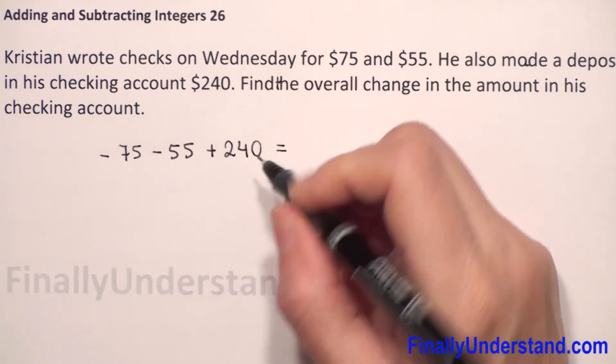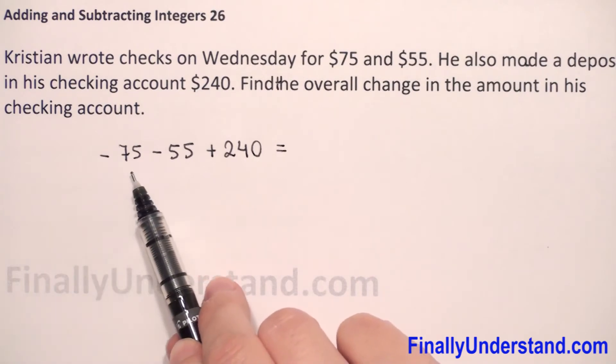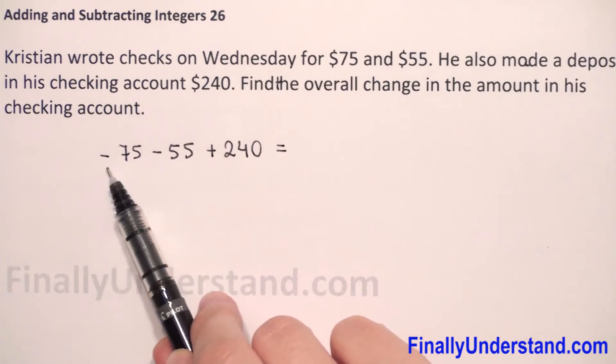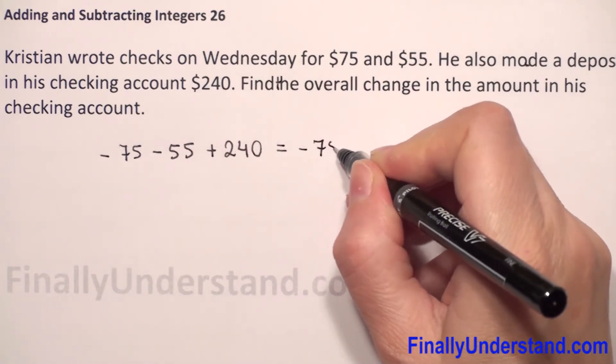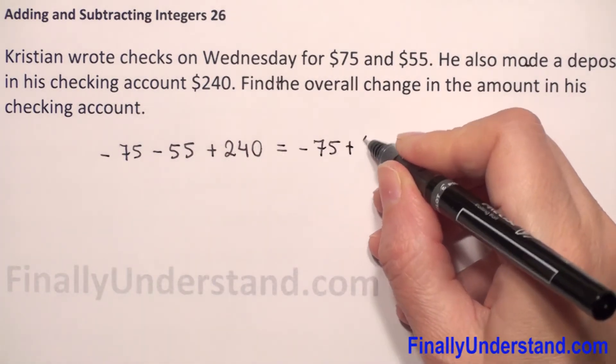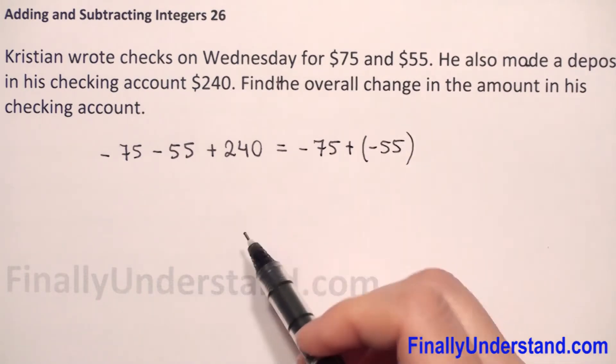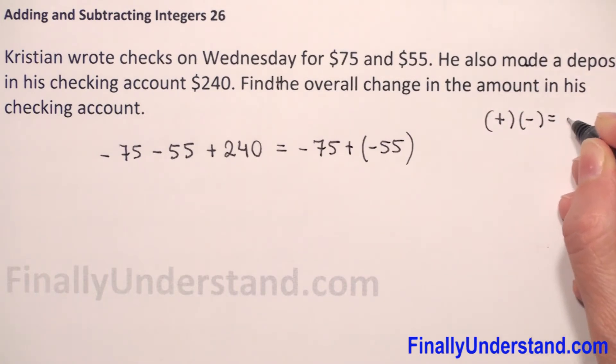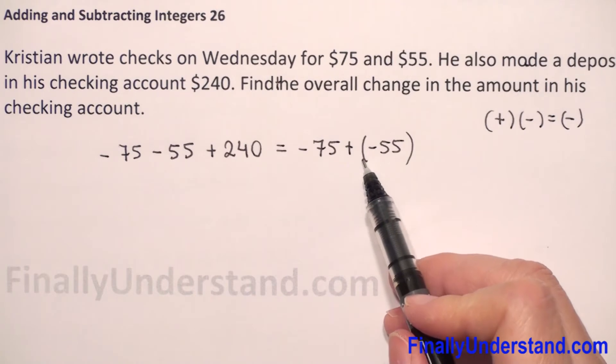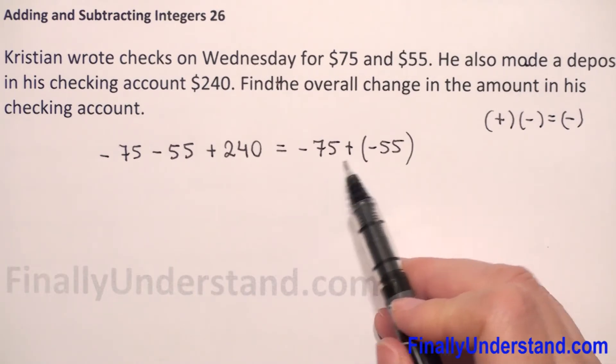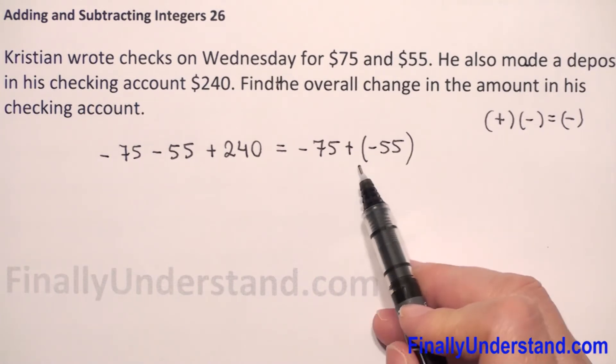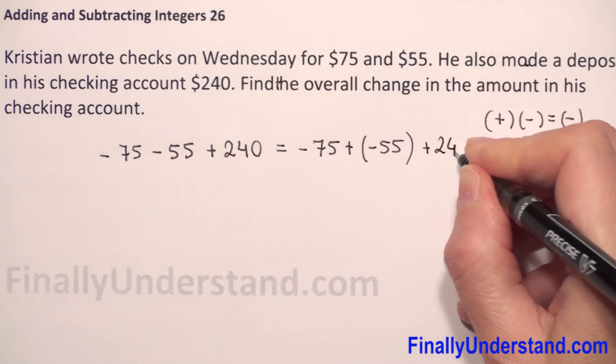Now we have to just do these operations. We have negative $75 and negative $55, so we can rewrite the subtraction of integers like addition. Because we have negative $75, we can write like plus negative $55. I didn't change anything because positive and negative is always negative. It's still negative, but now it's easier because we see what we have to do here. We have two negative integers and we have to add them. Of course, $240 we have to rewrite.